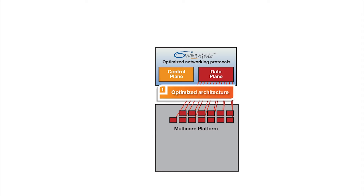On these cores, the 6Wingate data plane runs either in Linux user space or on bare metal. The remaining processor cores are configured to run the control plane, as well as Linux and the application software. The allocation of cores between the control plane and the data plane can be changed dynamically based on traffic patterns and application requirements at any point in time.